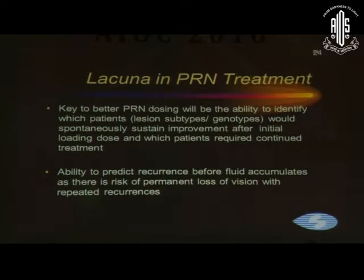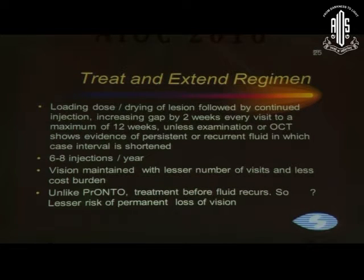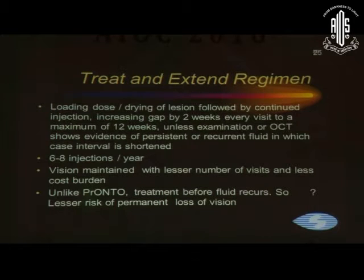The key to better PRN dosing will be the ability to identify which patients would spontaneously sustain improvement after the initial loading dose, which patients require continued treatment, and the ability to predict recurrence before fluid accumulates, as there is a risk of permanent vision loss with repeated recurrences. The treat-and-extend regime involves the loading dose and drying of the lesion, followed by continued injections with the gap increased by two weeks to a maximum of 12 weeks. However, if fluid accumulates or vision drops between visits, the interval is reduced and then gradually rebuilt. Unlike PRN treatment, with treat-and-extend you inject at a fixed point even before fluid recurs, capped at a maximum of 12 weeks.